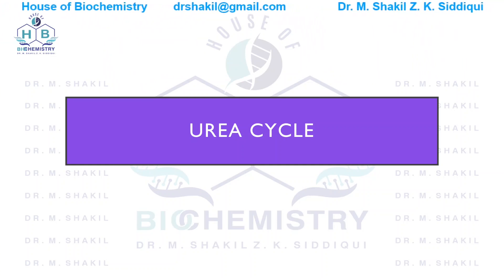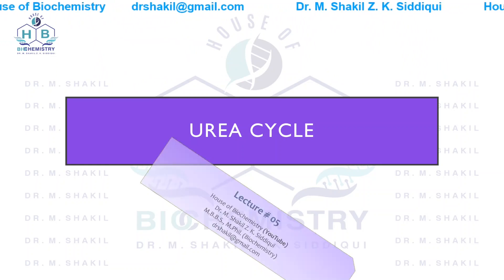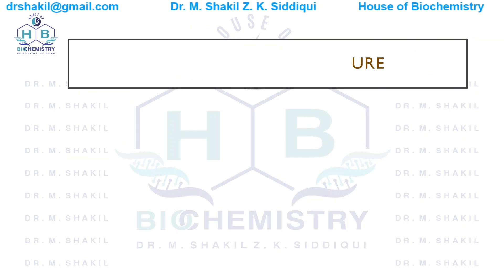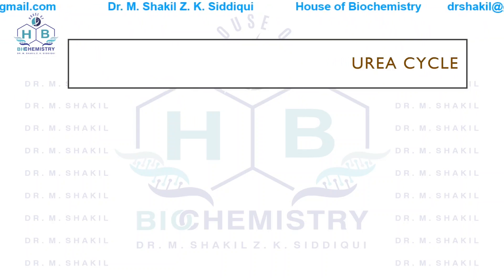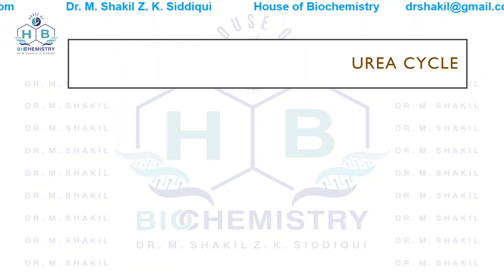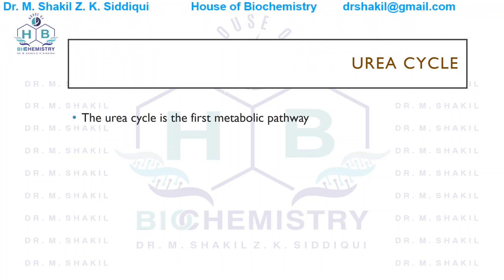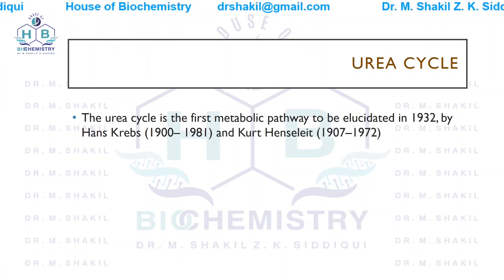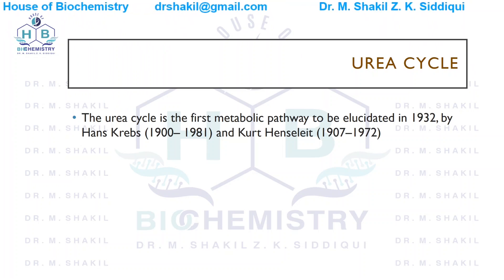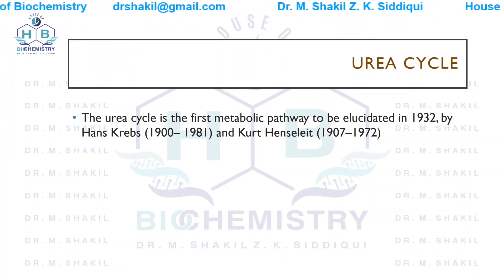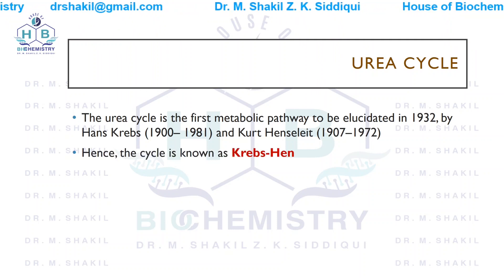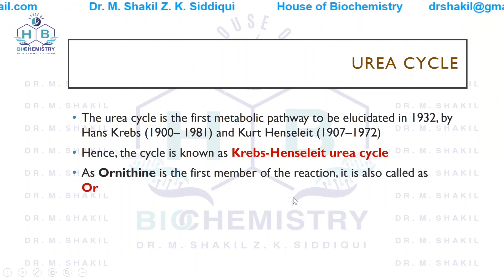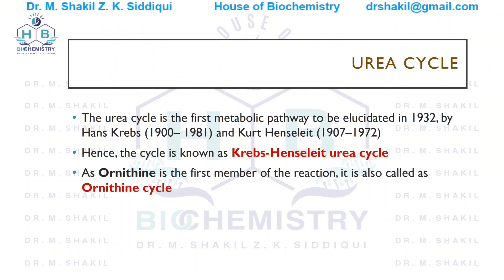In this lecture we will discuss the urea cycle. This is the fifth lecture of our series. The urea cycle is very important and is always asked in exams and viva. This cycle was elucidated in 1932 by Hans Krebs and Henseleit, so it is known as the Krebs-Henseleit urea cycle. Since ornithine is the first member of the reaction, it is also known as the ornithine cycle.